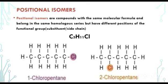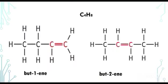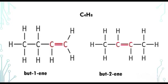Another example — we have but-1-ene and but-2-ene. The molecular formula is the same: 4 carbon atoms, 4 carbon atoms, 8 hydrogen atoms, 8 hydrogen atoms. But what is different is the position of the functional group — the double bond. The double bond on but-1-ene is attached to the first carbon, but on but-2-ene it is attached to the second carbon. Those are positional isomers — same molecular formula but different positions of the functional group.